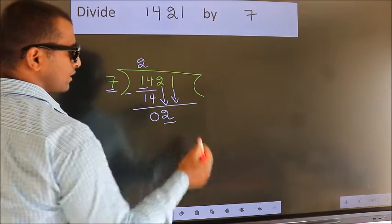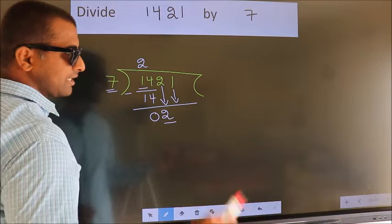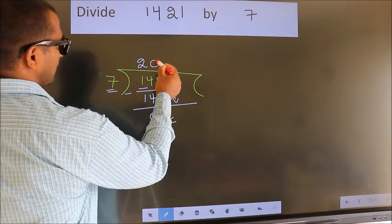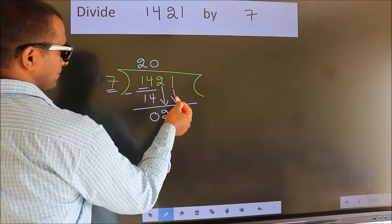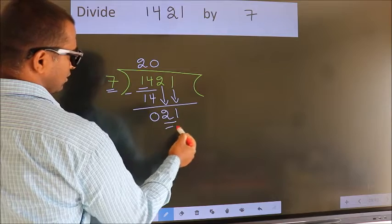And the rule to bring down second number is, put 0 here. Then only we can bring down this number. So, 21.